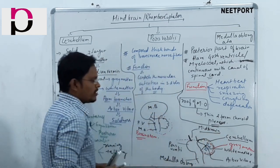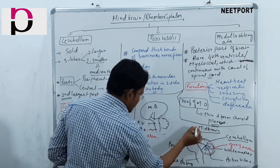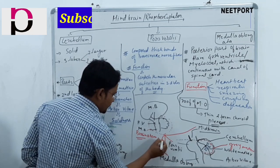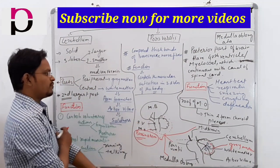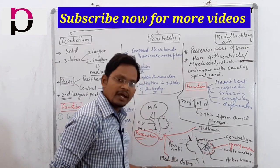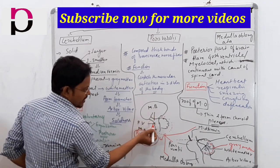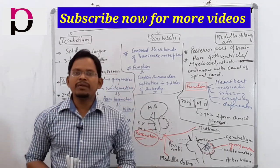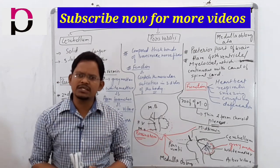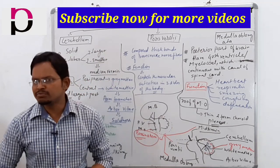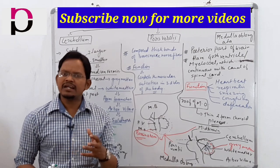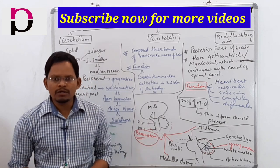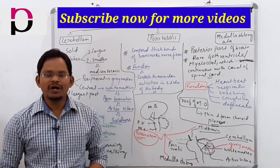So there are three terms here: midbrain, pons varoli, and medulla oblongata collectively form the brain stem. That's all about the hindbrain or rhombencephalon, which is divided into three parts: cerebellum, pons varoli, and medulla oblongata. In the next video we'll discuss the spinal cord. If you like my videos please subscribe to the channel and share the video as much as you can.